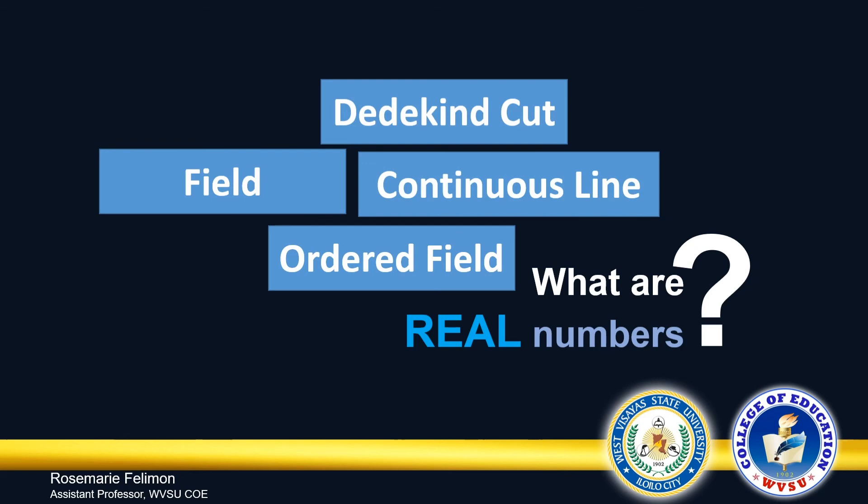Thus, we use a continuous line. There should be no gaps in that line. We have also stated that the set of real numbers is a field, specifically an ordered field.